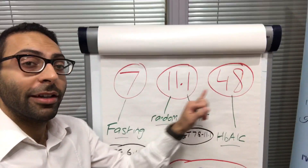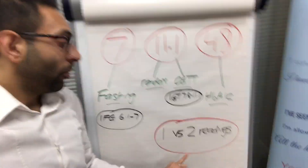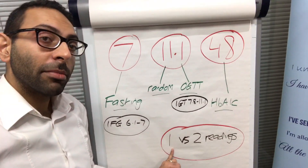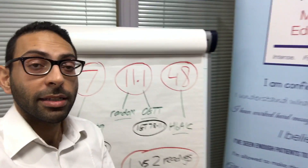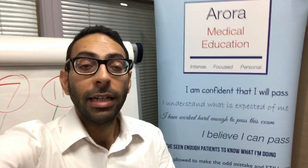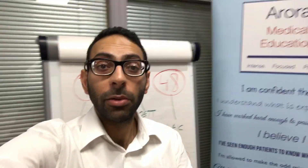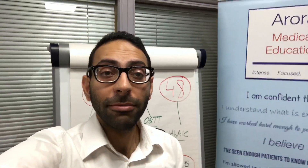Remember: 7, 11.1, 48. One reading if they're symptomatic, two if they're asymptomatic. We're just about to start a CSA course. I look forward to seeing some of you guys later on today. And if you've heard the quiz, let me know. Bye.